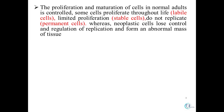In normal cell proliferation, cells proliferate and mature under a control system. We have labile cells that keep proliferating throughout life, stable cells showing limited proliferation with a resting stage, and permanent cells that, once differentiated, do not replicate further. Neoplastic or cancer cells, however, lose their control of replication — they keep on progressing and attain a property of autonomy, proliferating throughout life in an abnormal manner.